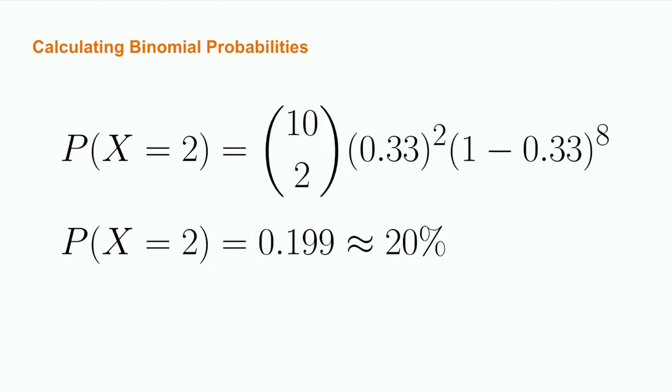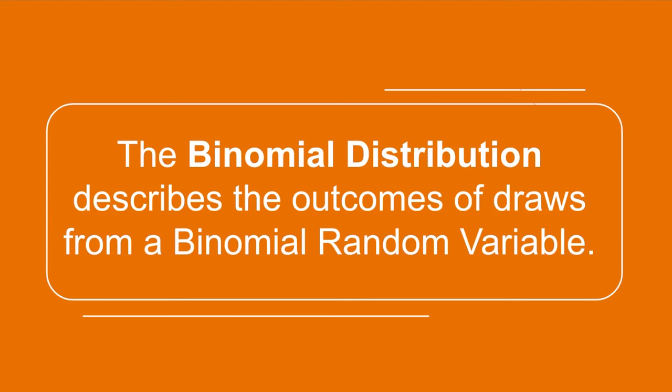Performing this calculation, the probability that x is equal to 2 is equal to approximately 0.199. That is, as a player, there is only about a 20% chance that you will win two out of every ten trials in this experiment. Hopefully, this has demonstrated a key aspect in the difference between success and failure in a single trial versus what a binomial random variable tracks. The binomial distribution describes the outcomes of draws from a binomial random variable. These outcomes do not necessarily line up exactly with the outcomes of a single trial.